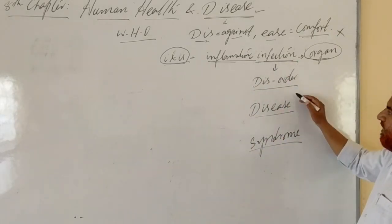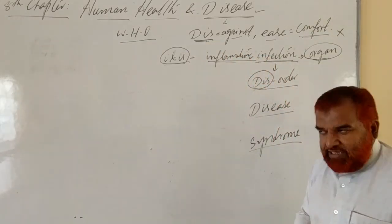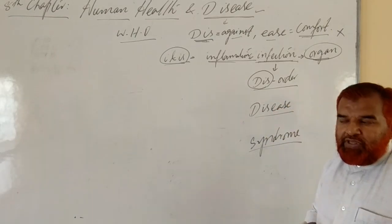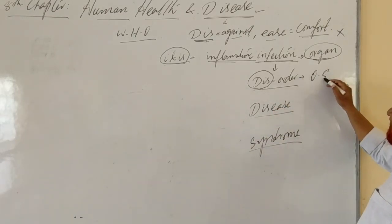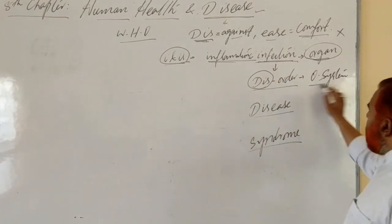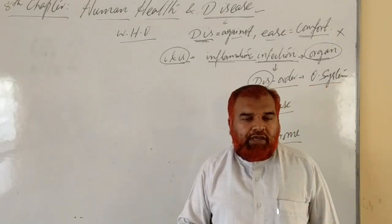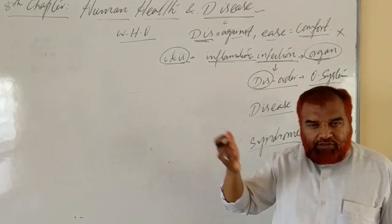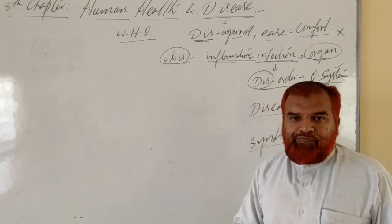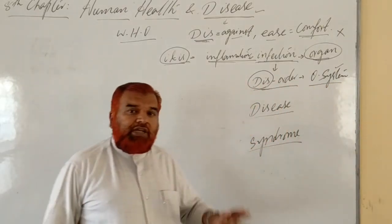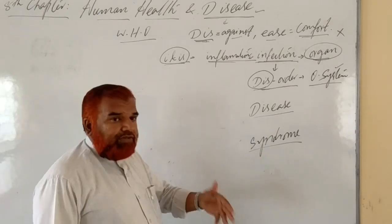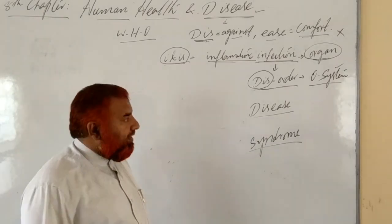When we go on to disorder, the meaning itself says disorder — it is not in order, not in series. Here an organ system is involved, not just one organ. In infection, an organ is involved; in disorder, a complete organ system is involved. For example, disorders of the digestive system or disorders of the respiratory system, which we studied in first year human physiology. Disorder is always concerned with an organ system where many organs are involved and one system is not performing its normal function.